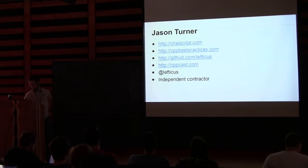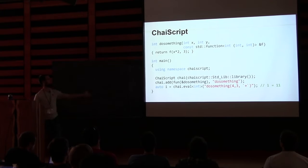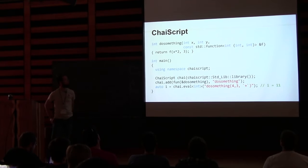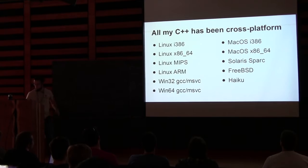That's ChaiScript — whenever I mention it, people ask about it. This is a complete example except for the include files. You are exposing a function called 'do something' to the scripting engine and then calling it on the last line, passing the plus operator in, which is automatically converted to a std function and type safe.